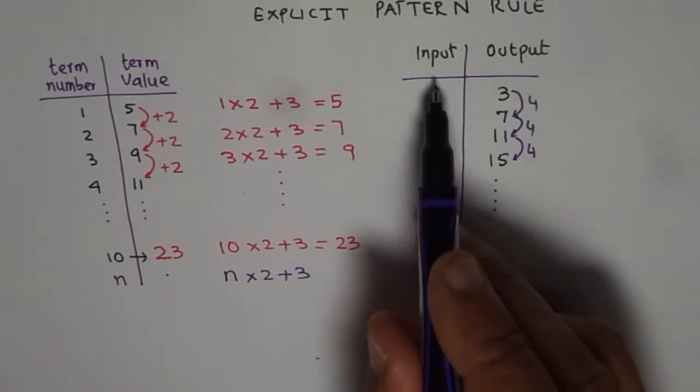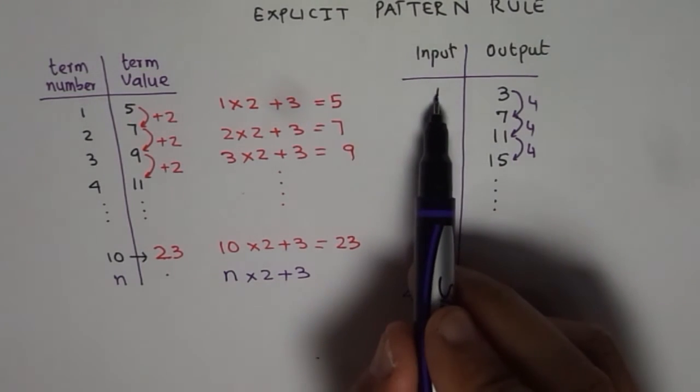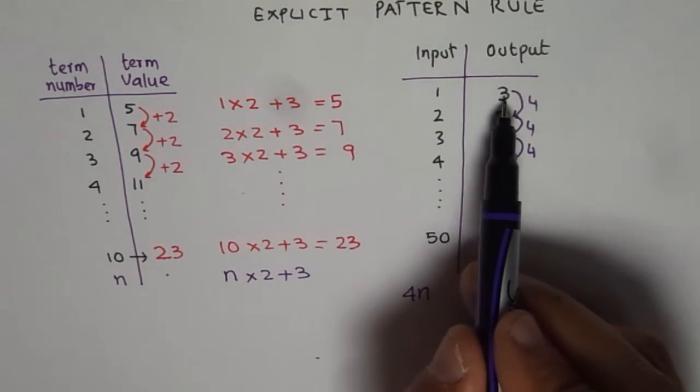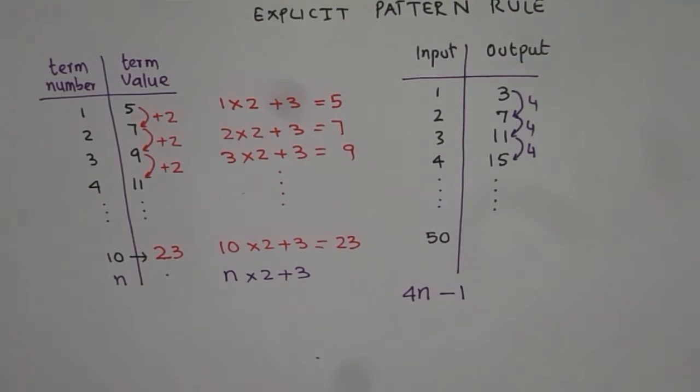We have to multiply the inputs by 4. So I say my rule is 4 times input. So if I do 4 times 1, I get 4. But I need 3. How will I get 3? Take away 1. So I say my explicit pattern rule for the second pattern is 4 times the number, take away 1. Let us check if it really works.